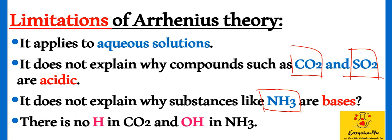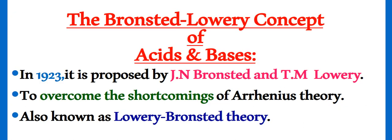That's why two scientists, Bronsted and Lowery, proposed a new theory for acids and bases. In 1923, this theory was proposed by J.N. Bronsted and T.M. Lowery.